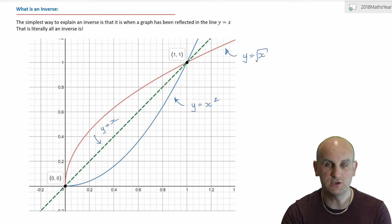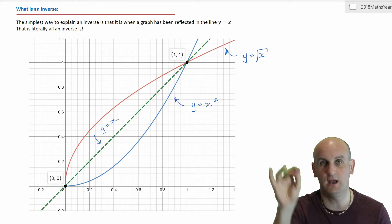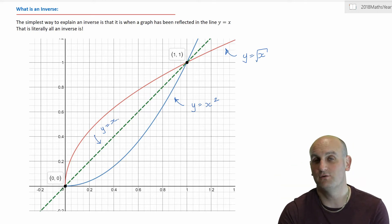So in any exam, now believe it or not, if I said to you draw an inverse of a particular graph, you should be able to do it. You just draw a dotted line diagonally through the graph, the line y equals x, and you just reflect it, just flip it over so that it just goes a different way, and you've done it. That's probably two or three marks before you even start.